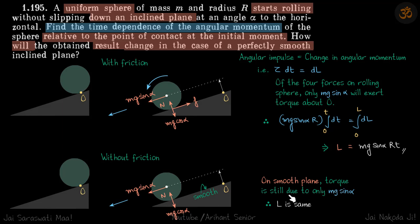On a smooth plane, torque is still due to only Mg sin alpha, so our answer by the same equation is going to be the same.